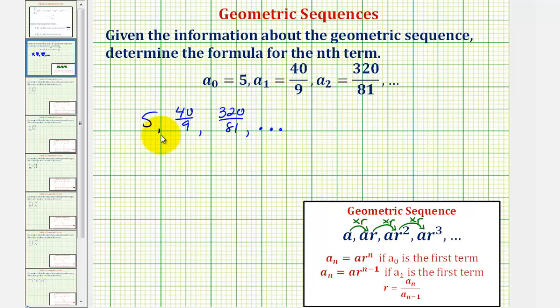So looking at our sequence, notice a, the first term is five. So if we can find r, the common ratio, we can determine the formula for the nth term. And again, because our first term is a sub zero, we're looking at this form of the formula.